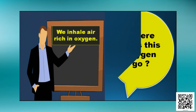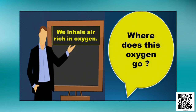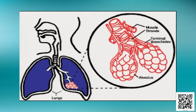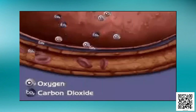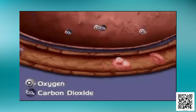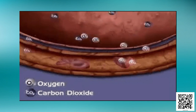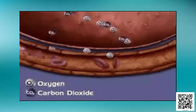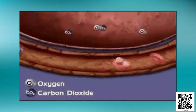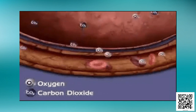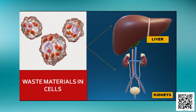We inhale air which is rich in oxygen. But where does this oxygen go after we inhale it? The oxygen reaches the lungs through the respiratory tract. In the lungs there are lots of alveoli, which are associated with blood capillaries, where oxygen and carbon dioxide get exchanged. Waste materials produced in the cells are transported to the liver and kidney for excretion.